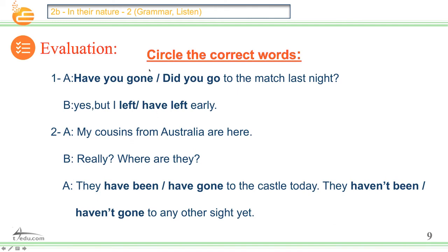Now, circle the correct word. Number one A: 'Have you gone' or 'did you go' to the match last night? Number one B: Yes, but I 'left' or 'have left' early. Number two A: My cousins from Australia are here. B: Really? Where are they? They 'have been' or 'have gone' to the castle today. They 'haven't been' or 'haven't gone' to any other site yet. Please choose the correct answer.